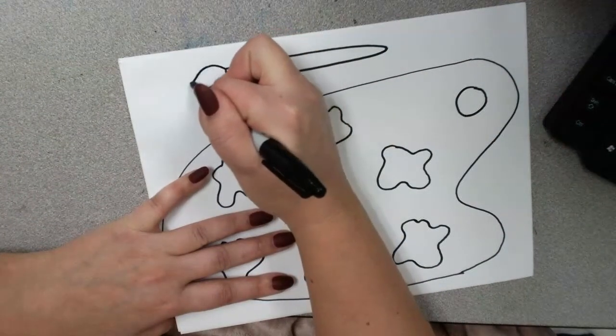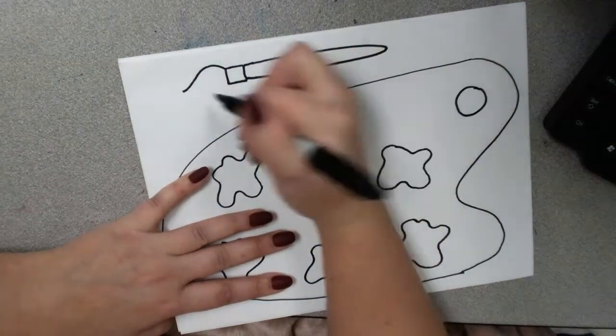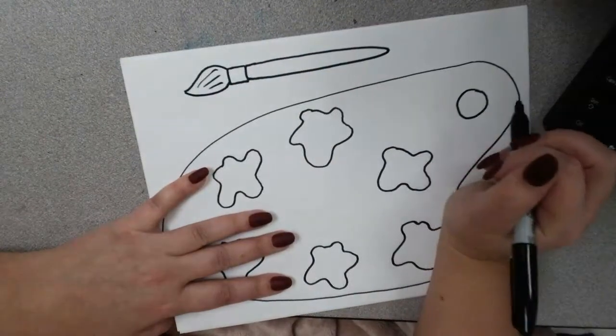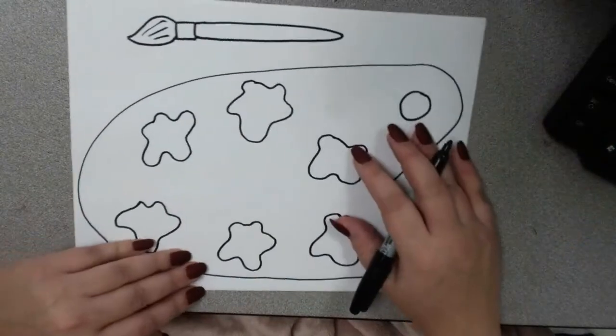And then, the tip of the paintbrush, we come and we curve out. And then, back in. And you can add little brush lines there. Now, it's time for us to add color.